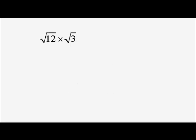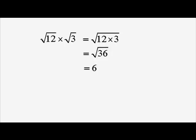Now, what about root 12 times root 3? Can we simplify that? Let's use the rule the other way around and multiply them together to get root 12 times 3, which is root 36, which is 6. That's very definitely a simplification — root 12 times root 3 just ends up as 6.